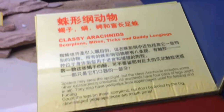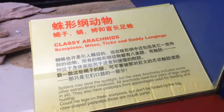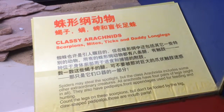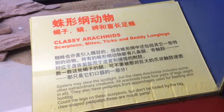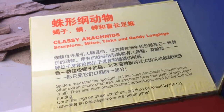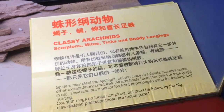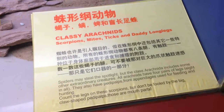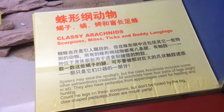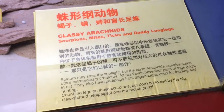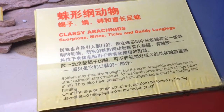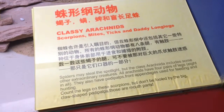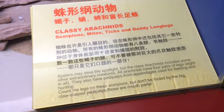Classy arachnids: spiders may steal the spotlight, but the class Arachnida includes some other extraordinary creatures. All arachnids have four pairs of legs — eight in all — and they have pedipalps, front appendages used for feeding and hunting. Count the legs on these scorpions, but don't be fooled by the big claw-shaped pedipalps — those are mouth parts.